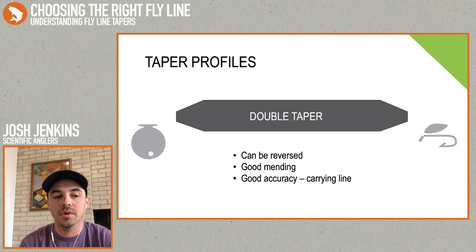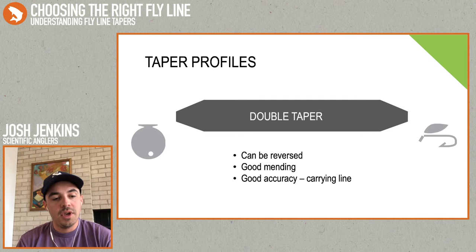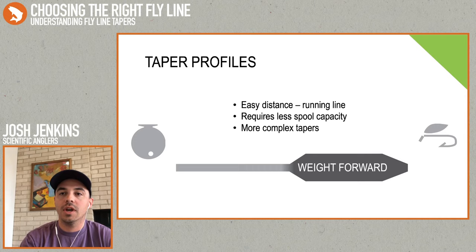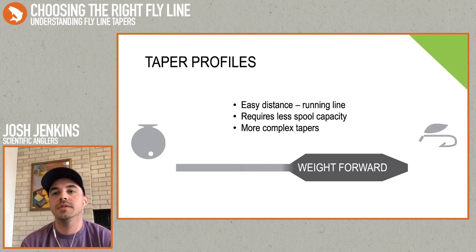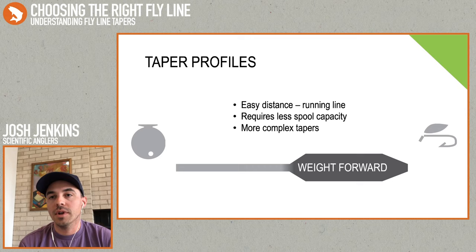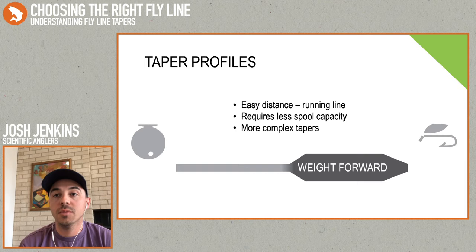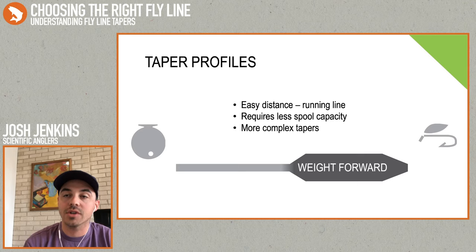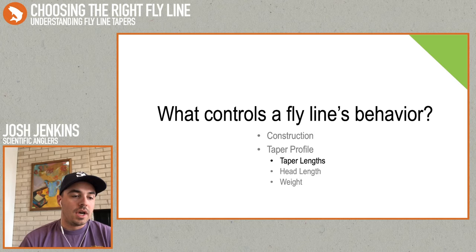The main reason we make weight forward lines is for easy distance. When you take that head and drop down to a thin diameter line, you're reducing the amount of friction, which makes it easier to shoot and easier to get distance. It also requires less spool capacity — because we drop down to that smaller diameter running line, we can fit more backing on the reel. And now we're actually casting that rear taper, so we can make more complex, differentiated tapers.